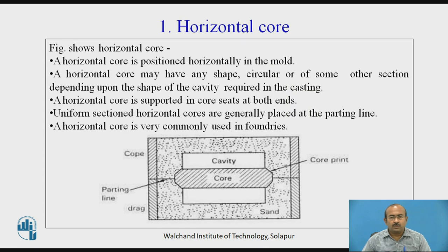Let us discuss the particular types of cores based on their position or placement. First, the horizontal core. A horizontal core is positioned horizontally in the mold as shown in the figure. It may have any shape — circular or other cross-sections — depending on the shape of the cavity required in the casting. A horizontal core is supported in core seats at both its ends. Uniform sectioned horizontal cores are generally placed at the parting line. A horizontal core is very commonly used in foundries.